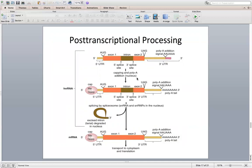These three modifications or processes are what are referred to as intron and exon splicing, addition of the 5' cap, and then addition of the 3' poly-A tail.